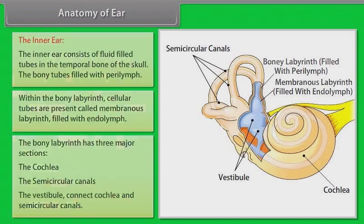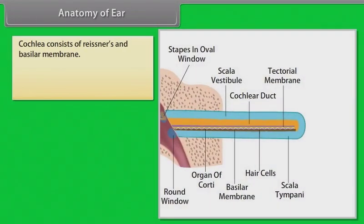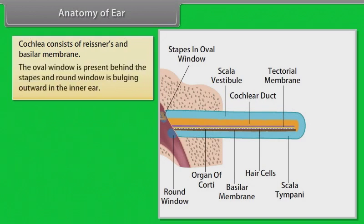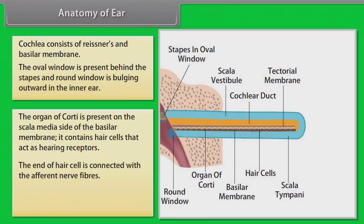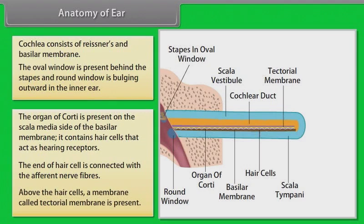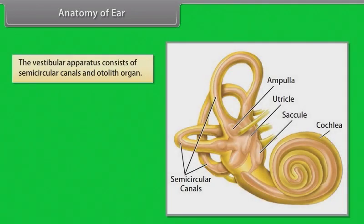The cochlea consists of Reissner's membrane and the basilar membrane. The oval window is present behind the stapes and the round window bulges outward in the inner ear. The organ of Corti is present on the scala media side of the basilar membrane and contains hair cells that act as hearing receptors. The ends of the hair cells are connected with afferent nerve fibers, and above the hair cells a membrane called the tectorial membrane is present.